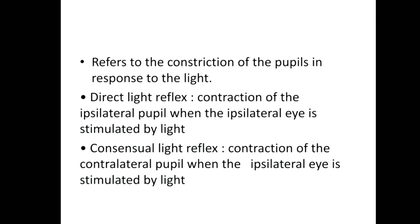Hello everyone, today we will be discussing the light reflex. Light reflex is the response of our pupils when we are shining a torchlight in front of the eyes. It has two components: direct light reflex, which is the constriction of the pupil in front of which the torchlight is being shined, and consensual light reflex, which refers to the constriction of the other eye's pupil.